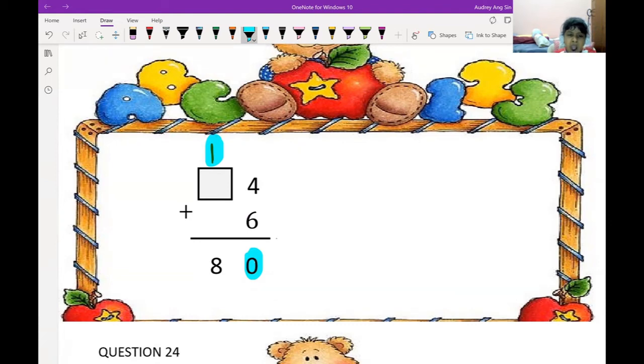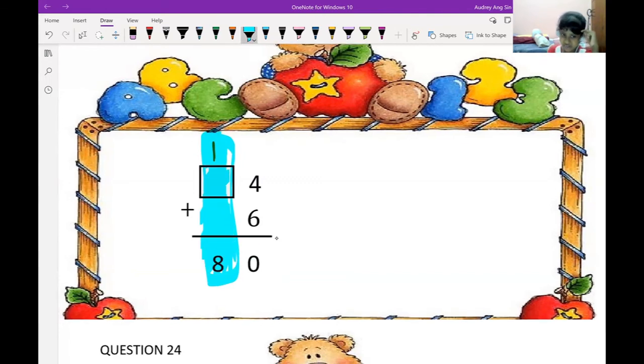Okay, now I do the front one. I do front one. How to do? 1 plus box equals to 8. How to find the box? 1 in your head. 1 in my head. After 1, 2, 3, 4, 5, 6, 7, 8. I stop until 8. Very good. You stop until 8 because this is 8. So how many fingers you have there?